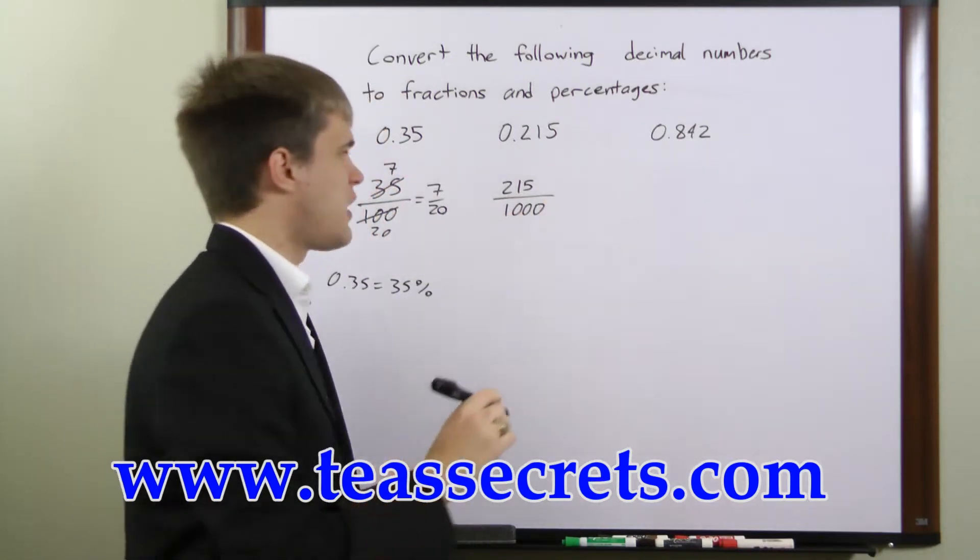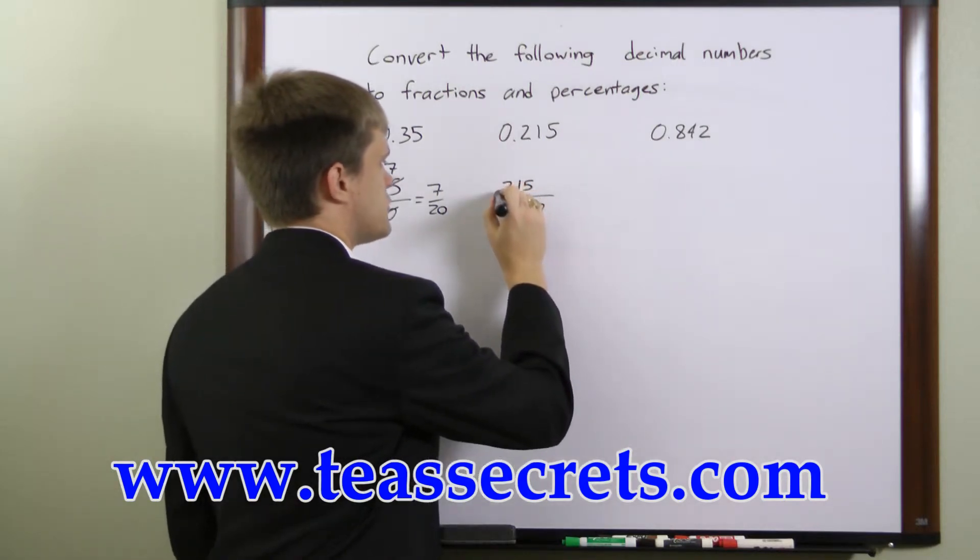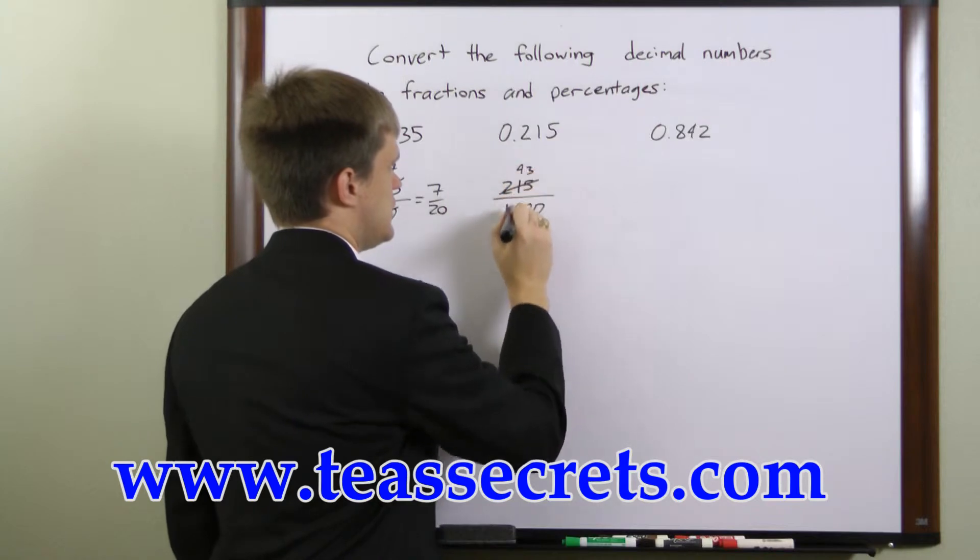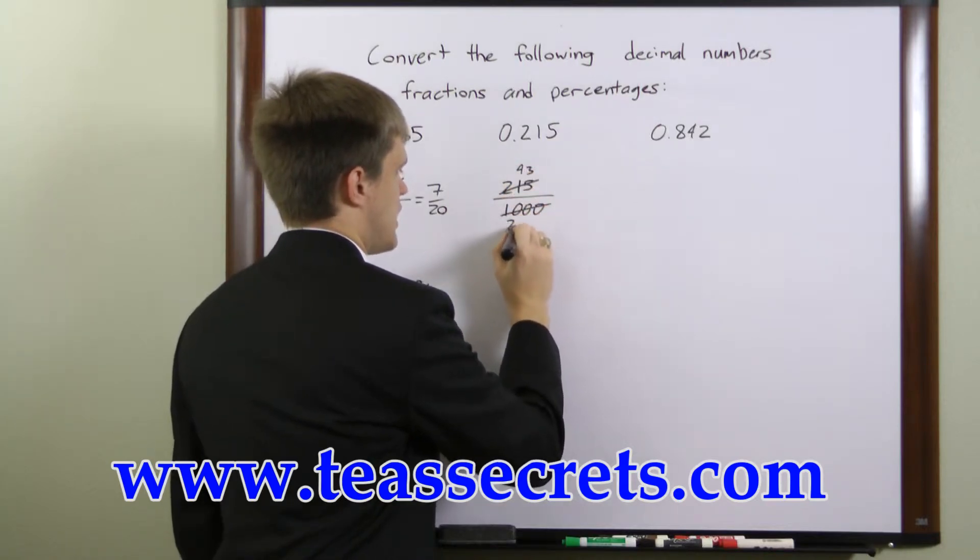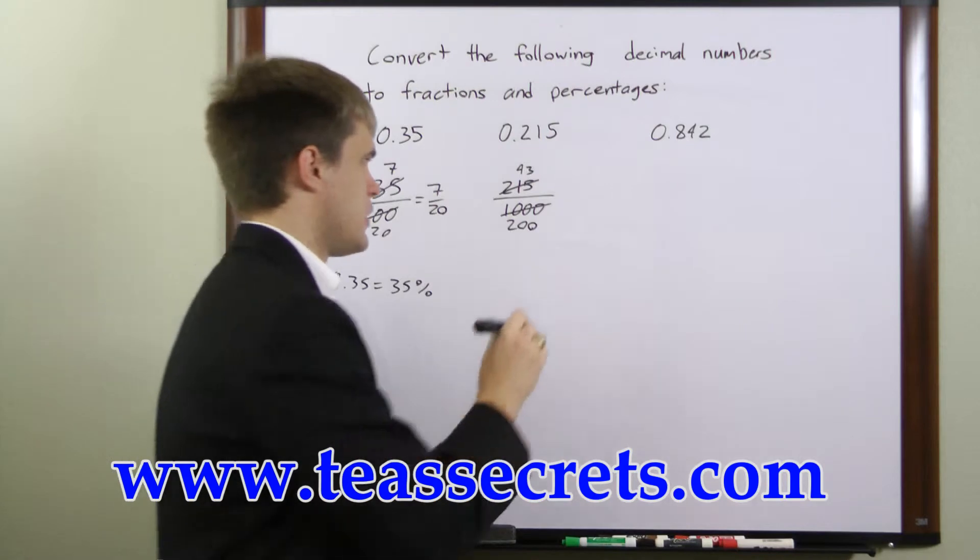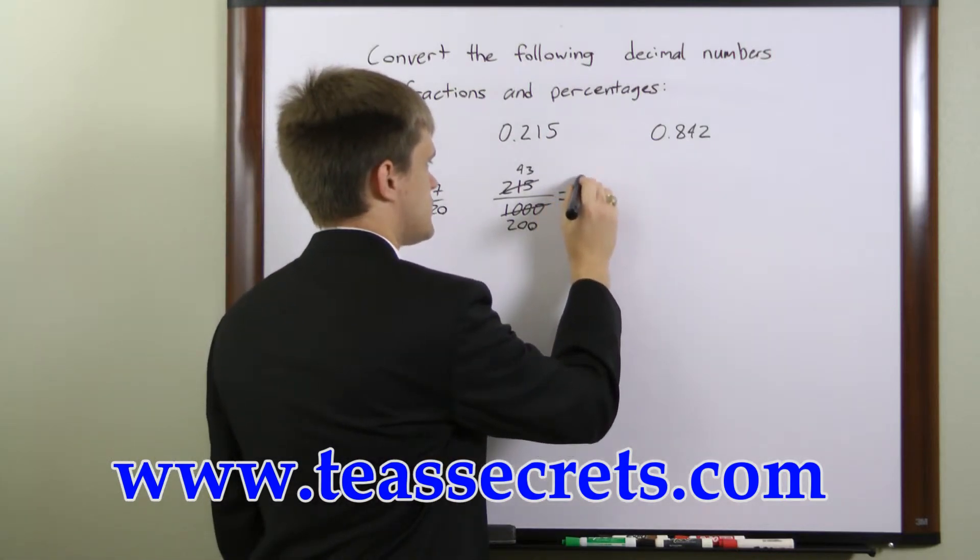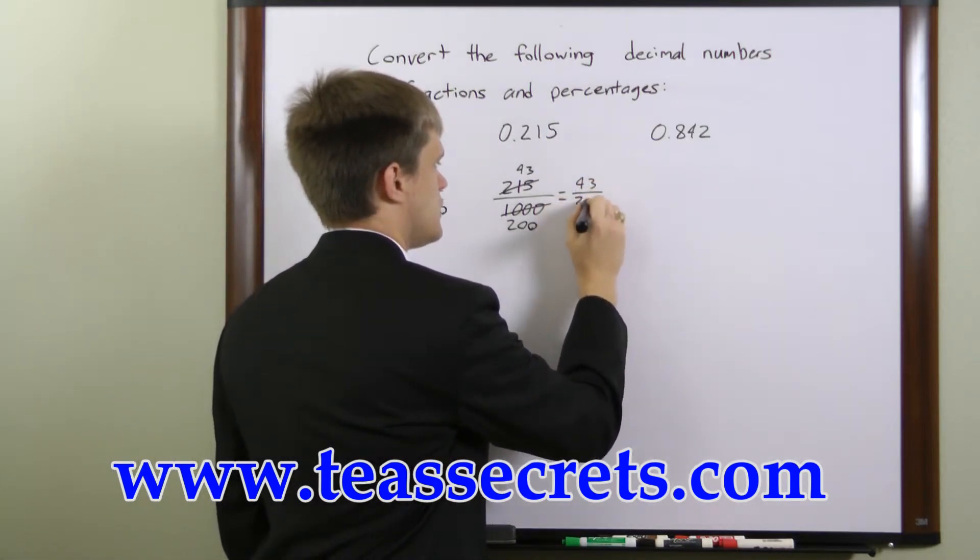We can divide top and bottom by 5, so 215 over 5 is equal to 43, and 1,000 over 5 is equal to 200. So this fraction is the same as 43 over 200.